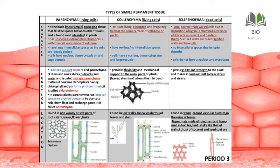Now collenchyma. Collenchyma are living, elongated cells with irregular thickening present in their corners. The thickening is of either cellulose or pectin.